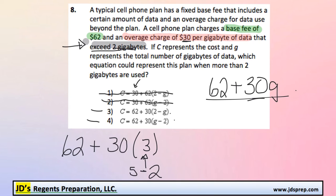So hopefully you can see from that example that what we would do in each situation is you would take the number of gigs used, in this example 5, but in general it would be G, and we would subtract 2 from it because 2 of those gigs are covered in the plan. So the actual equation would be 62 plus 30 times G minus 2.